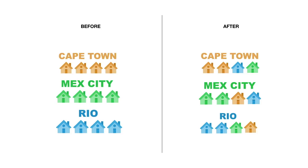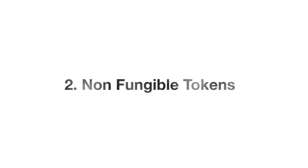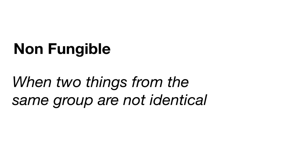Yes, we can actually create a decentralized system that allows the risks to be traded among insurance companies. Cape Town will insure some houses in Brazil and some in Mexico; Mexico will insure some in South Africa and Brazil; and Brazil will insure some in Mexico and Cape Town. In order for that to happen, we need to look at non-fungible tokens. Non-fungible means two things from the same group are not identical — an example of something fungible is gold bars, while something non-fungible would be property and buildings.